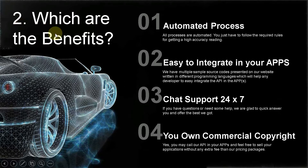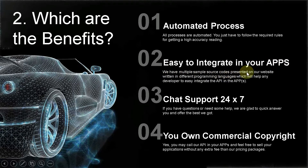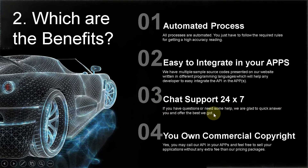Which are the benefits? Automated process — all processes are automated; you just have to follow the required rules for getting high accuracy reading. Easy to integrate into your apps — we have multiple sample source codes on our website written in different programming languages to help any developer easily integrate the API. Live chat support 24/7 — if you have questions or need help, we are glad to quickly answer you. You own commercial copyright — you may call our API in your apps and feel free to sell your applications without extra fee.